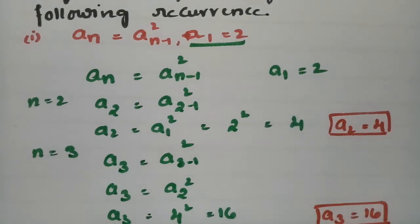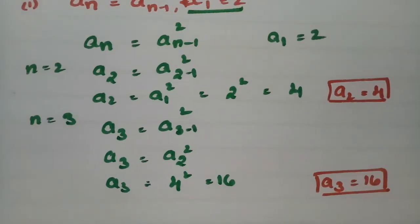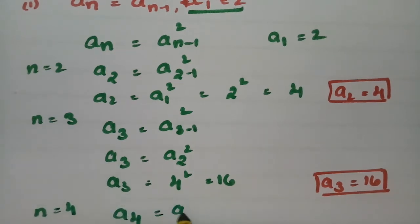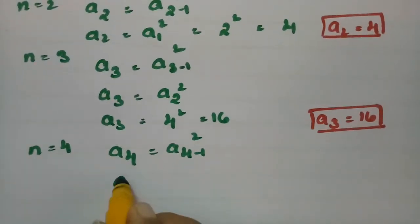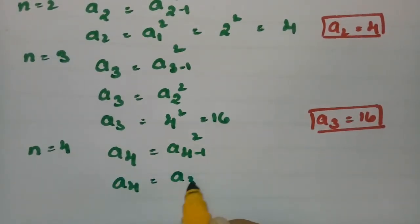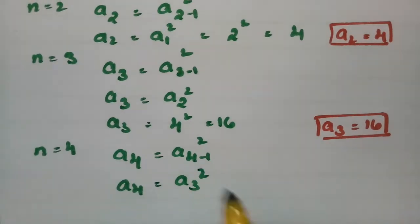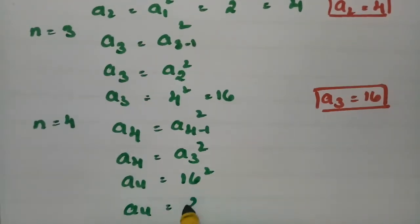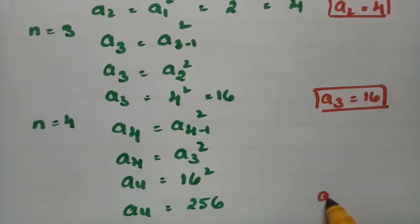Next, put n = 4. So a_4 = (a_{4-1})² = (a_3)². What is a_3? a_3 = 16, so a_4 = 16² = 256. Our a_4 value is 256.